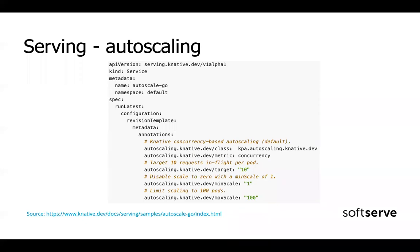How to manage autoscaling? Kubernetes itself is also doing autoscaling based on horizontal pod autoscaler and other solutions. As you can see, also with one Knative Serving manifest, we're able to configure autoscaling and it just works.